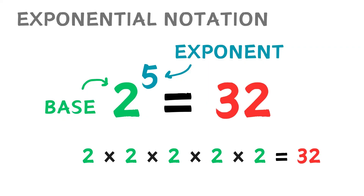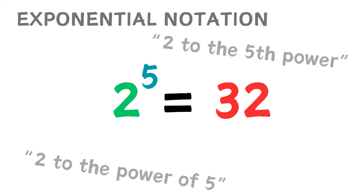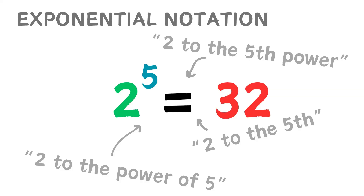The product of an exponential function is called a power. In our example, we would call 32 a power of 2. There are many ways to vocalize our exponential expression: it could be read as '2 to the power of 5,' '2 to the 5th power,' or '2 to the 5th.' All of these mean the same thing.